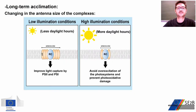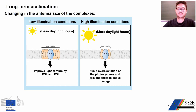Regarding long-term acclimation, an example is the number of antenna proteins bound to the reaction center, the so-called antenna size. A reduced antenna size aims to avoid the overexcitation of the photosystems, with the risk of photodamage, during very hot summer days for example. A larger antenna size aims to improve the capturing of light in suboptimal light conditions, for example in short winter days.